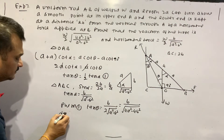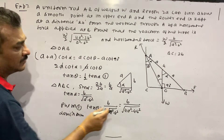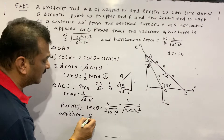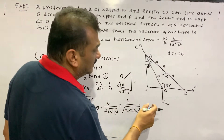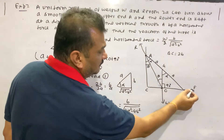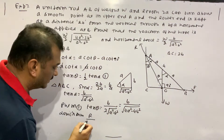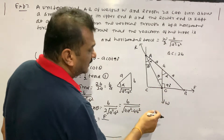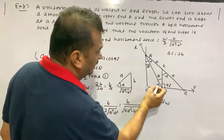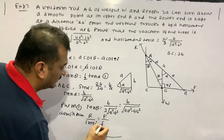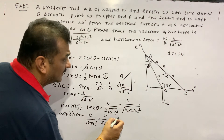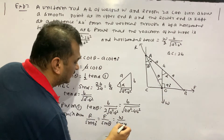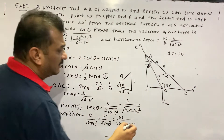Using Lami's theorem applied at O: R upon the angle between the other two forces — the weight is 90 degrees, so sin 90 degrees — equals F upon sin theta, and weight upon sin of 90 degrees plus theta.